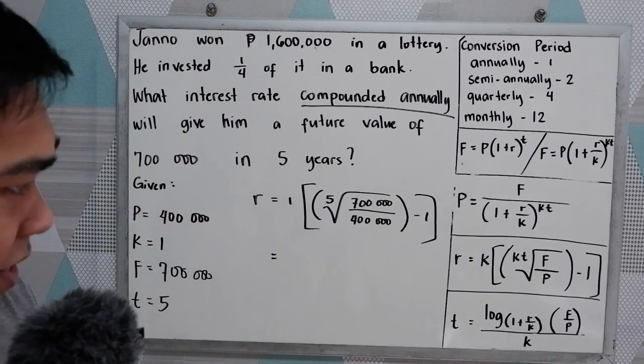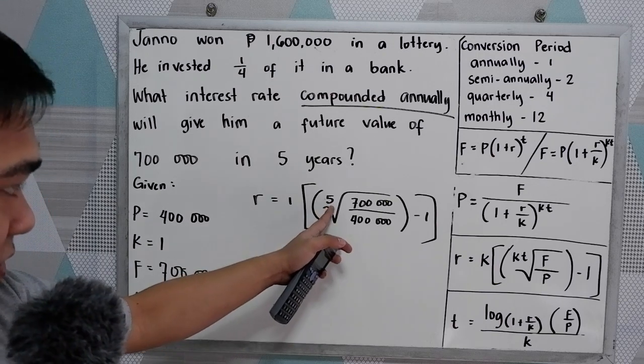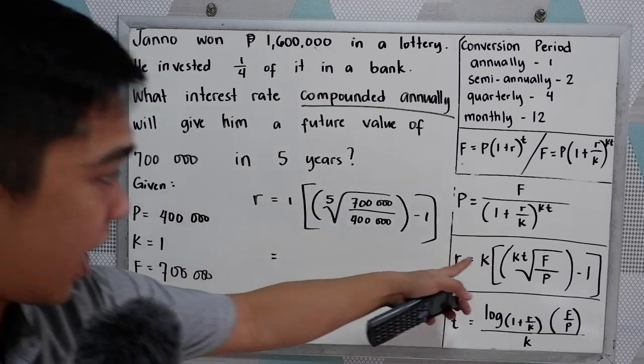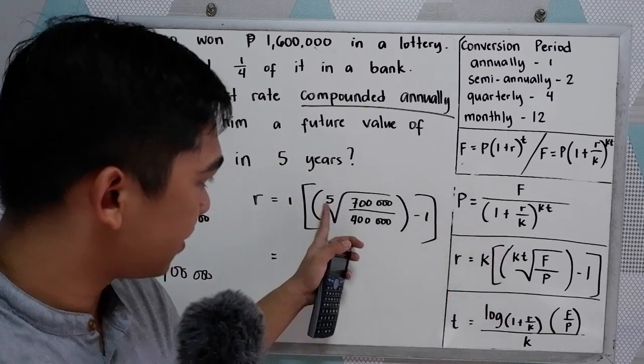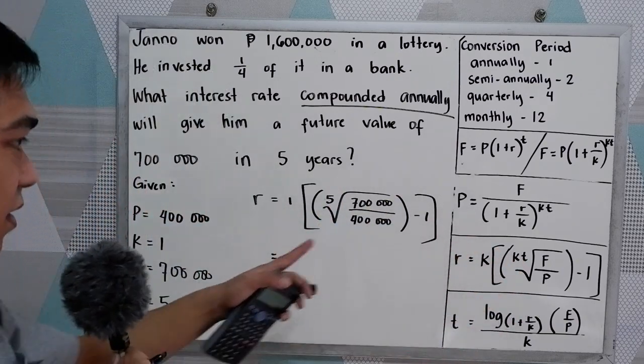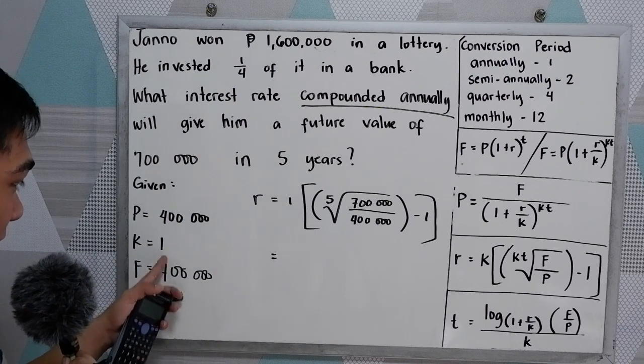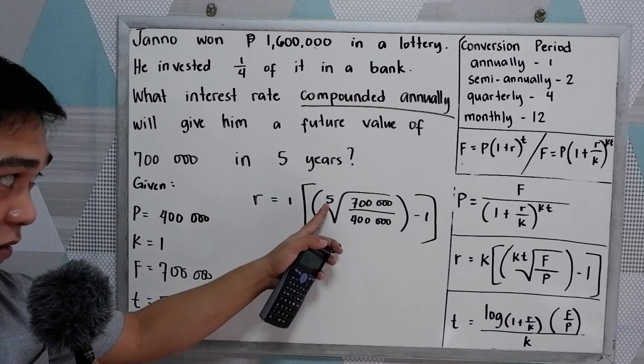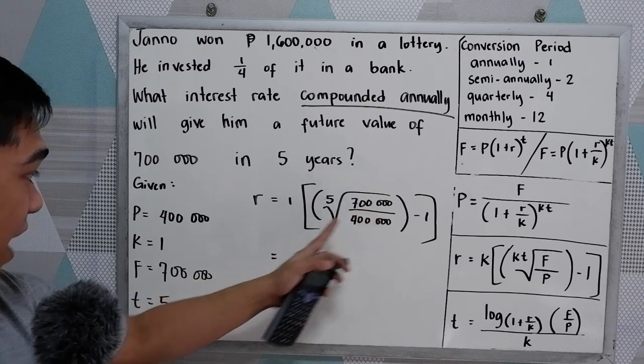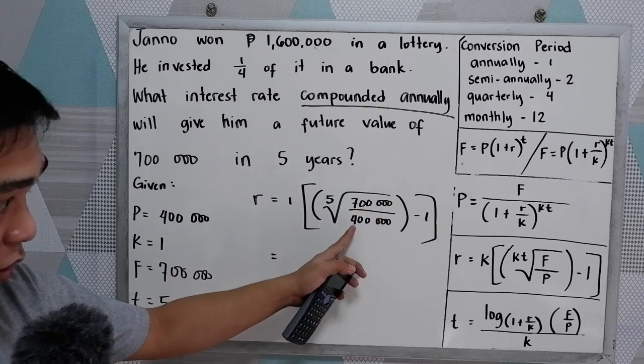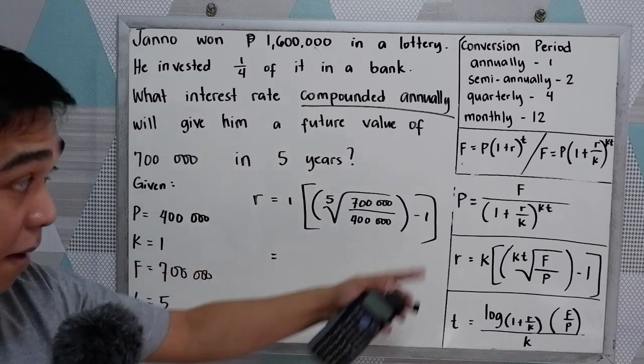So let us check. One. So K, that is one. KT root. So K times T. So one times five. That's why we have five here. Root of F, 700,000 over P, 400,000 minus one.